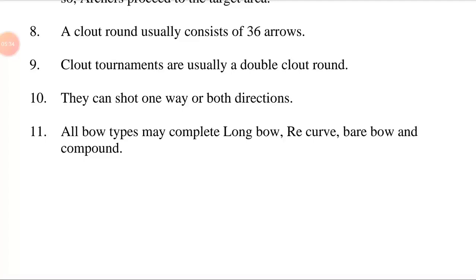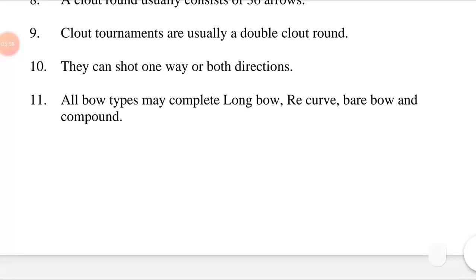A clout round usually consists of 36 arrows. Clout archery is a form of archery in which archers shoot arrows at a flag from a relatively long distance and score points depending on how close each arrow lands to the flag. A single clout round consists of three dozens of arrows shot in ends of six. Tournaments typically consist of a double clout round in which a total of six dozen arrows is shot. Archers can shoot one way or both directions.